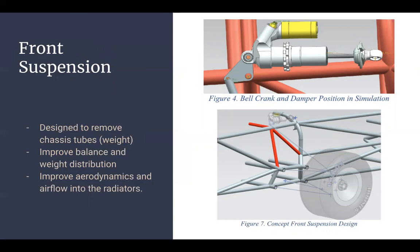You can see in the top right corner that our shock and our bell crank are up above on the top roll hoop of our vehicle. That allows for a clean flow of air to get over our aerodynamics elements in the front wing and it feeds into the radiators in the rear of the vehicle.